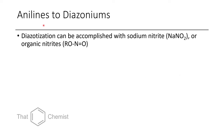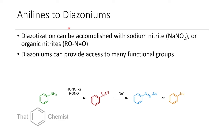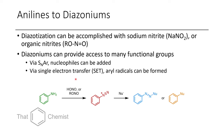One thing you can do with anilines is diazotize them, replacing the NH2 with an N-triple-bond-N+, which can then be displaced by attack at the benzene ring with a nucleophile, or the nucleophile can attack at the nitrogen. For instance, you could do an EAS reaction where an electron-rich benzene attacks at that nitrogen, giving what's known as a diazo compound, which are often used as dyes or food coloring. Additionally, treating the diazonium with a photocatalyst in the presence of light can generate an aryl radical, useful for cyclization reactions via SET.